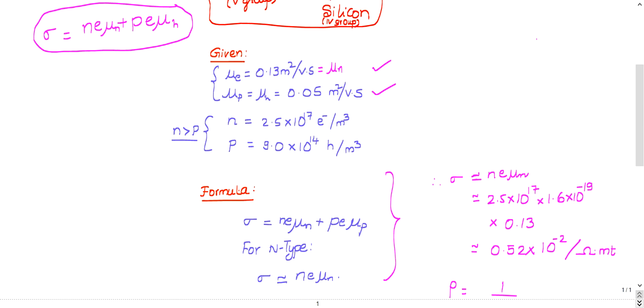In this formula, n indicates electron density (electrons per meter cube), and p indicates hole density (holes per meter cube). The term e indicates the charge of the electron, 1.6×10^-19 coulombs.